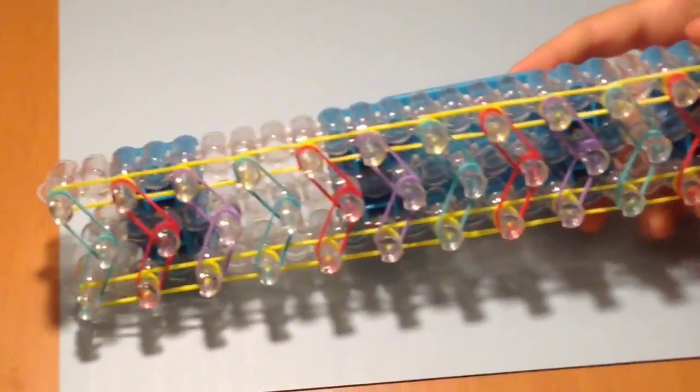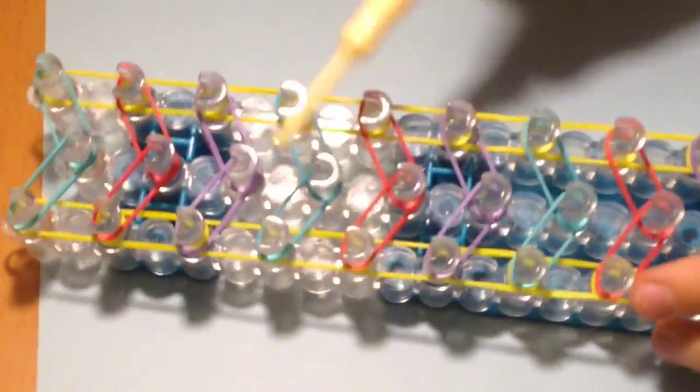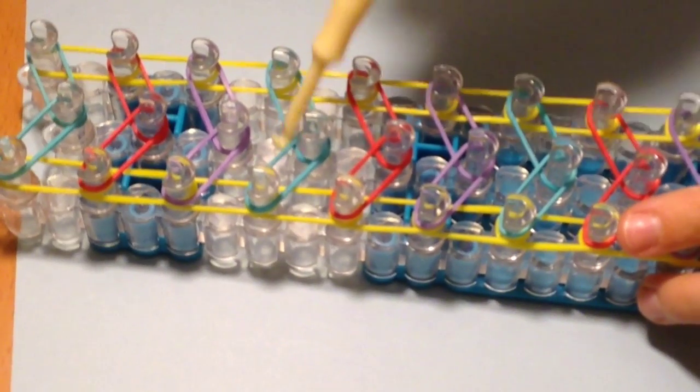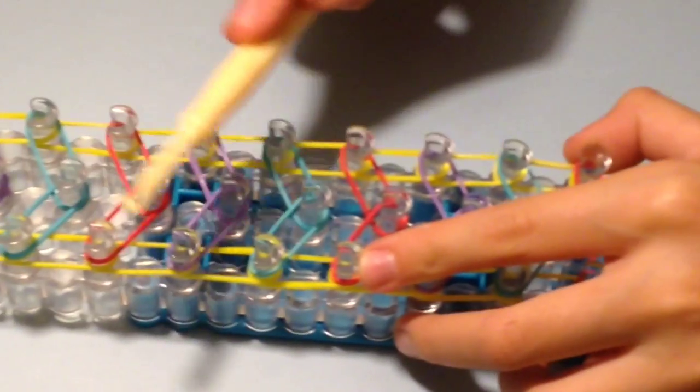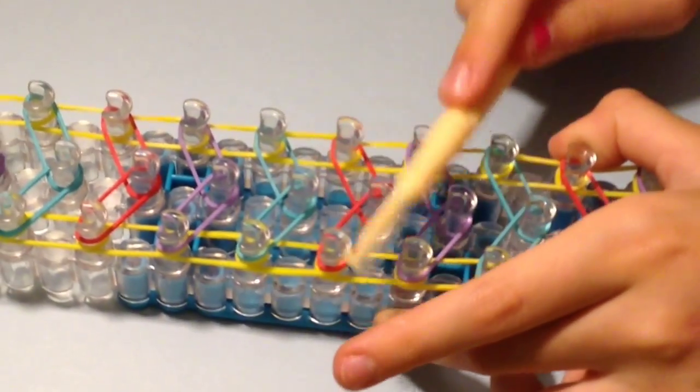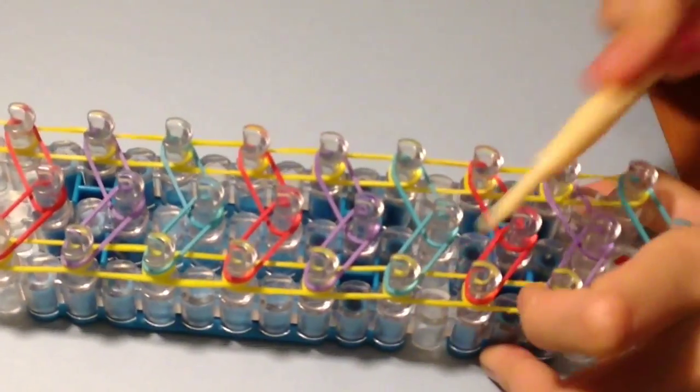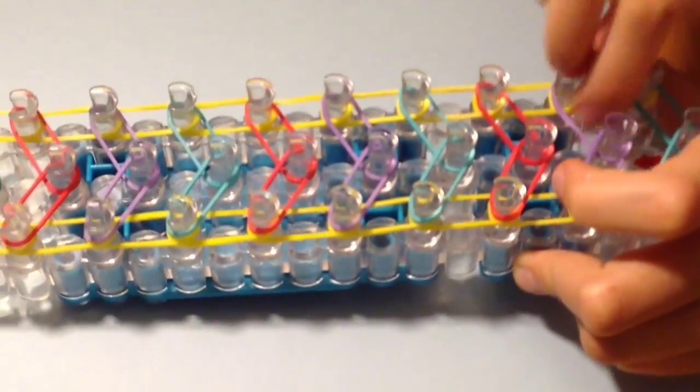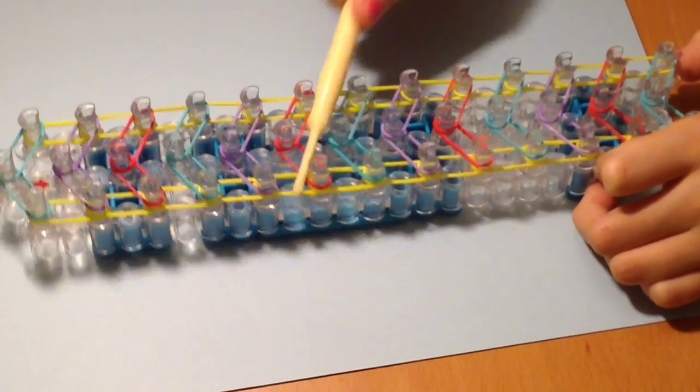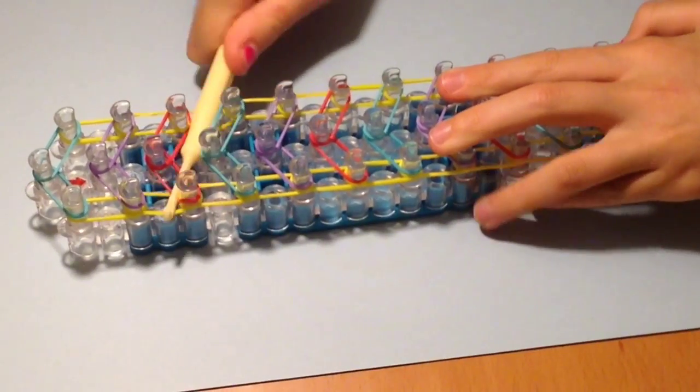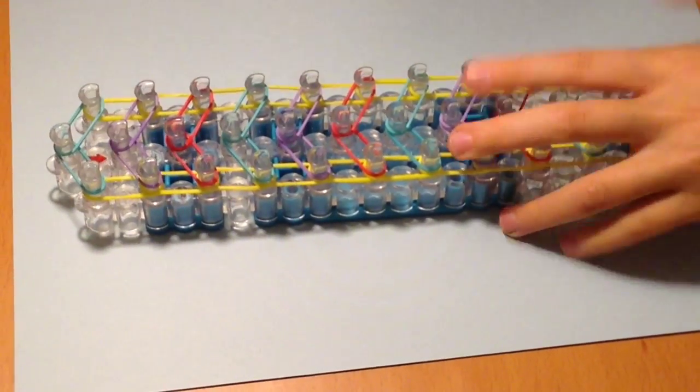So you're going to continue doing this until the end. The result should look like this. If it doesn't look like this, go back and do it again. Make sure your rubber bands are slanted all the way to the bottom because we're going to put other rubber bands on top of that. One is twisted, so you have to untwist it. Turn it around, do the same thing. Pull it all the way down.